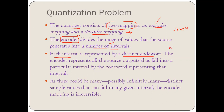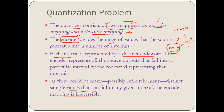For example, code word 000 corresponded to the interval minus 4 to minus 3 at the decoder side. Since there could be infinitely many distinct sample values that can fall in any given interval, the encoder mapping is irreversible. I cannot decode back whether 000 relates to a value of 0.36, 0.37, or 3 — so I cannot reverse it.